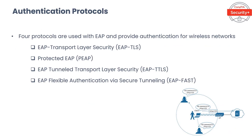Now let's talk about authentication protocols. There are four protocols used with EAP that provide authentication for wireless networks: EAP-TLS, PEAP, EAP-TTLS, and EAP-FAST. EAP-TLS uses certificate-based mutual authentication, negotiation of the encryption method, and encrypted key determination between the client and the authenticating server.